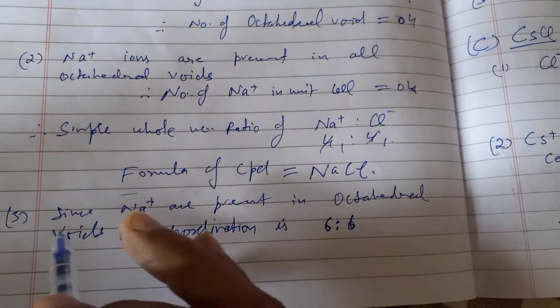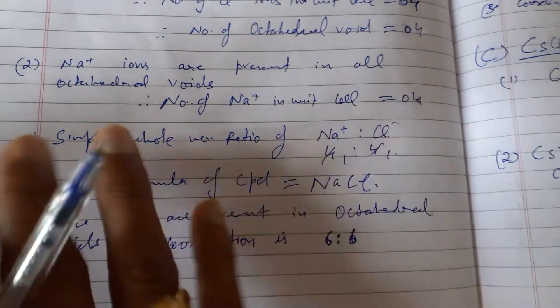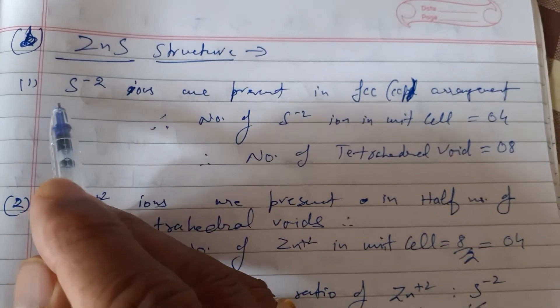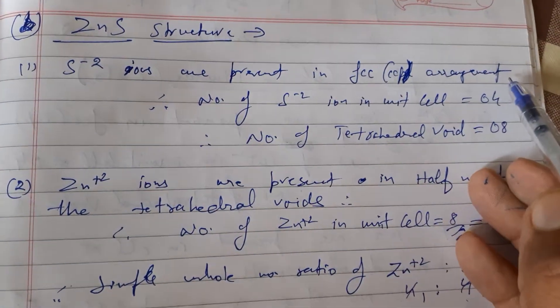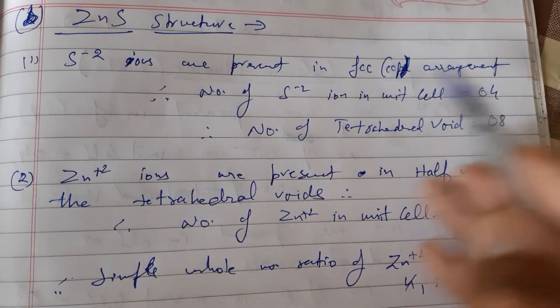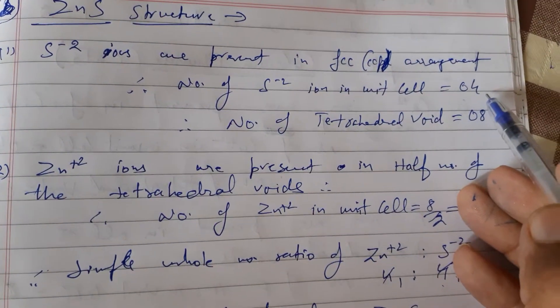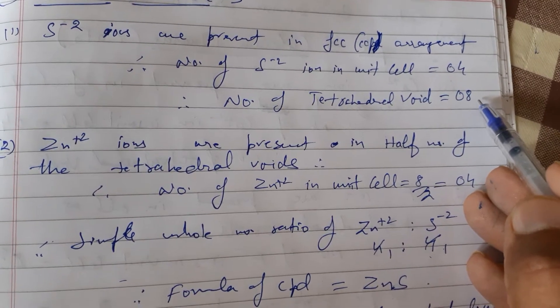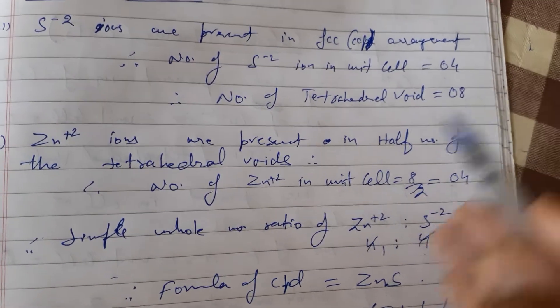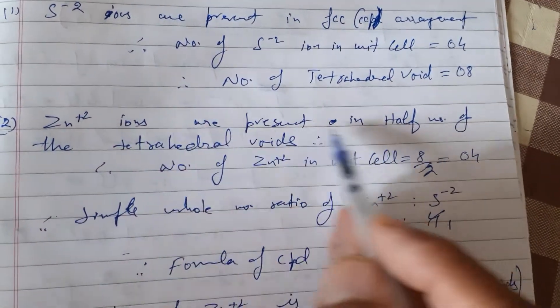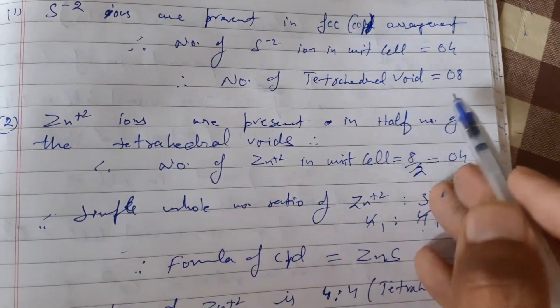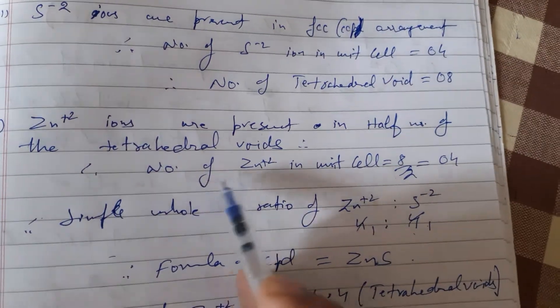The second structure we deal with is the zinc sulfide structure. In the zinc sulfide structure, sulfide ions are present in FCC arrangement, so the number of sulfide ions in the unit cell is four. Tetrahedral voids are double, so the number of tetrahedral voids is eight. Zinc ions are present in one-half of the tetrahedral voids, meaning four tetrahedral voids are occupied by zinc ions.